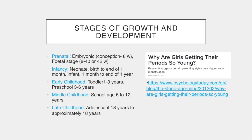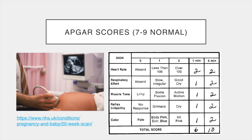Having said that, the social can impact on the physiological. For example, there is evidence that changes in diet and insecure attachment can lead to earlier periods. There is a link on the slide to an article from Psychology Today that discusses this with reference to research in this area if you would like to read more.